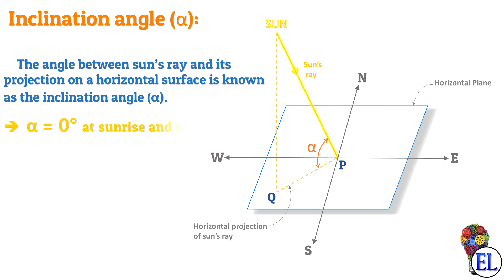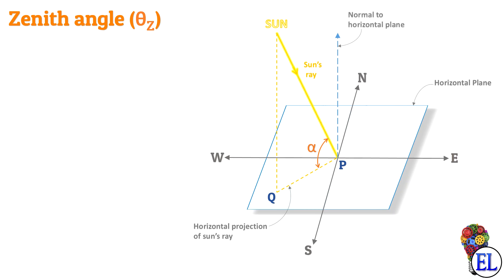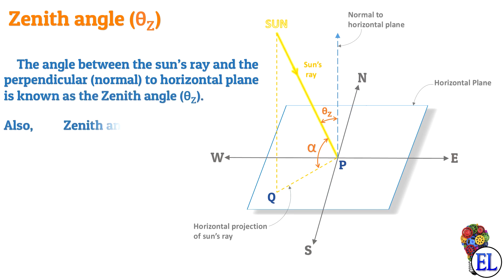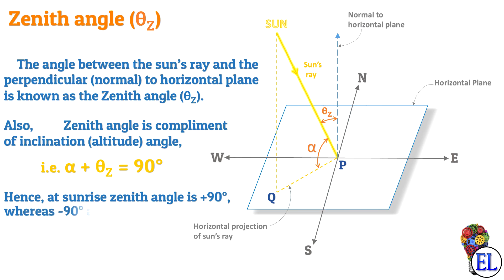The value of alpha will be 0 degrees at sunrise and at sunset. Moving to zenith angle: considering the normal to the horizontal plane, the angle formed between the sun's ray and this normal is known as zenith angle, denoted as theta z. From the geometry, zenith angle is the complement of inclination angle. Mathematically, alpha plus theta z equals 90 degrees. Hence, at sunrise the zenith angle is plus 90 degrees, whereas minus 90 degrees at sunset.